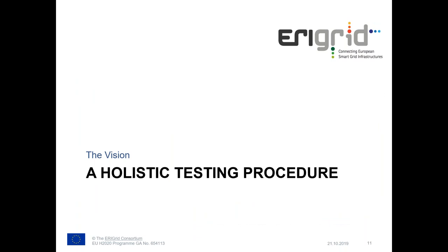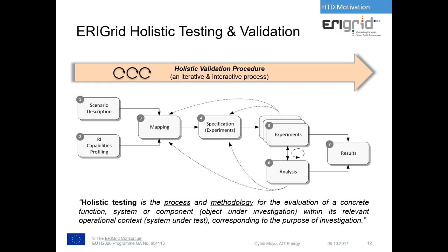This gives rise to the holistic test processing procedure, central to the project — looking from left to right: from defining a scenario generically to producing reproducible results. The holistic testing definition is: the process and methodology for the evaluation of a concrete function, system, or component within its relevant operational context, corresponding to the purpose of investigation. This definition frames what the holistic test description aims to provide: a framework for identifying specific things mentioned in the definition and how they build up a good scenario.